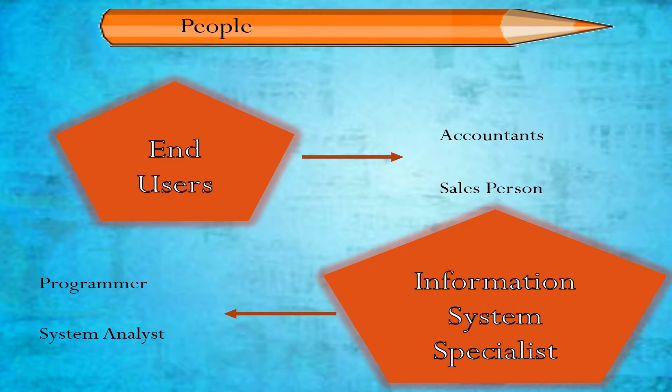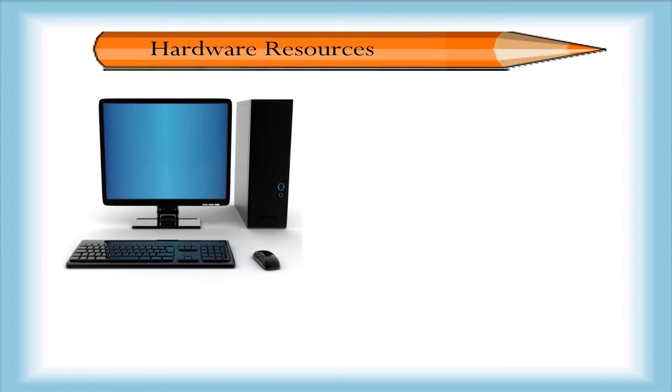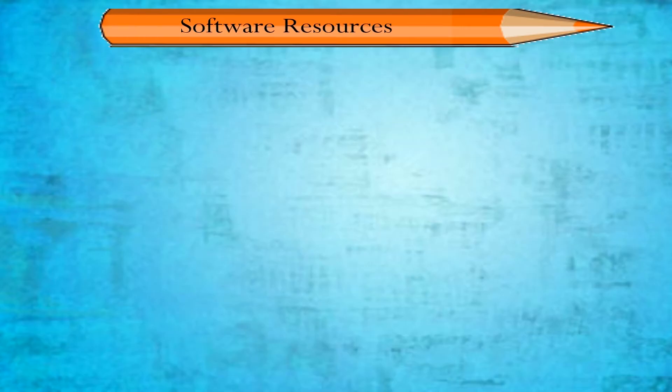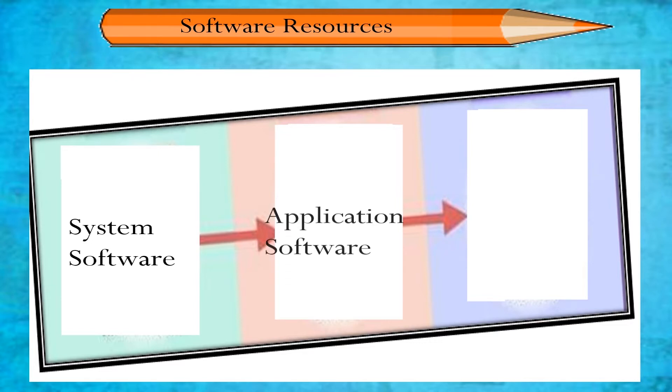The second type of resource used in information systems are hardware resources. These include computer systems and peripheral devices. The third type of resource used in information systems are software resources. And these include: system software such as operating systems; application software such as a sales analysis program; and utility software such as typing and spreadsheet software.